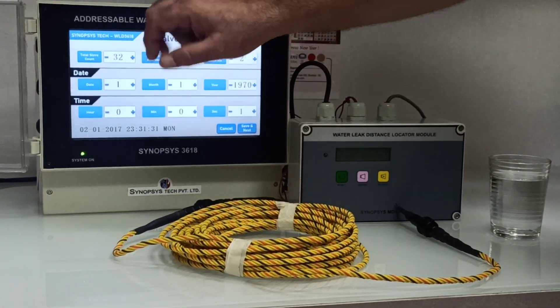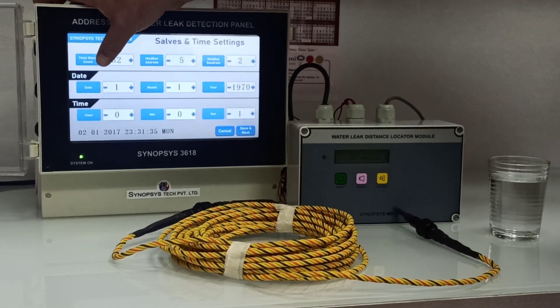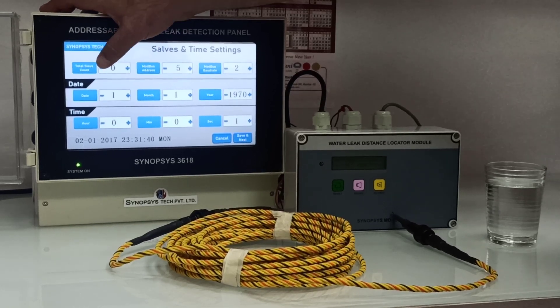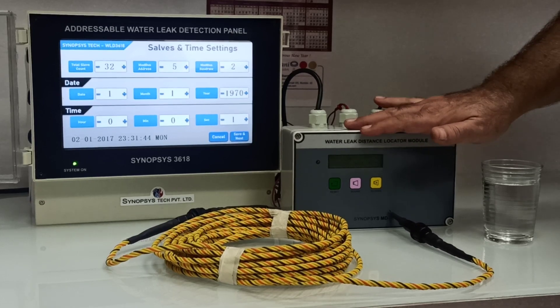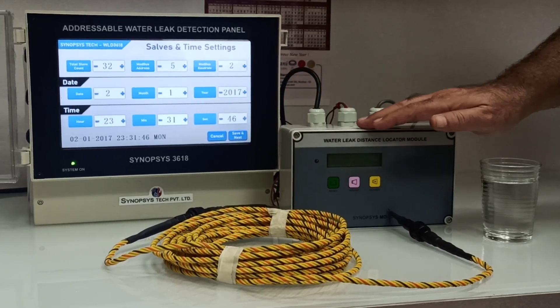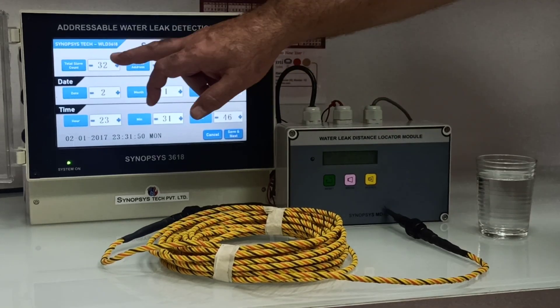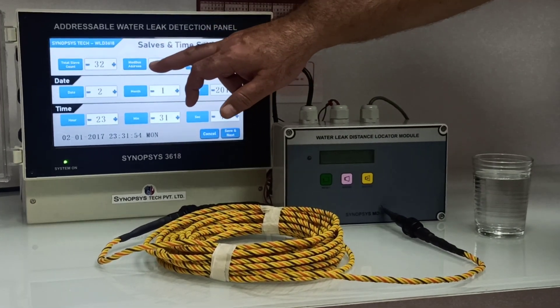Here you have total number of slaves which is connected, so you can increase or decrease the total number of the slaves. The slaves means the SIM modules - the SIM modules which are placed in the rooms like server room, UPS room. Each room will have one SIM module.